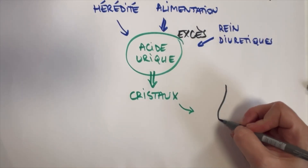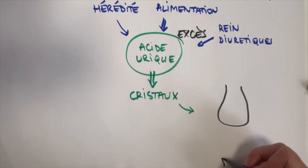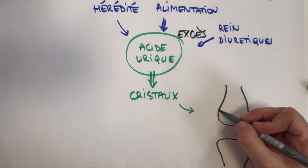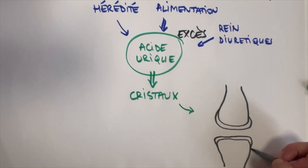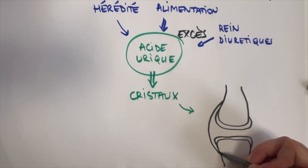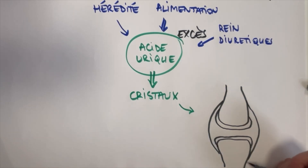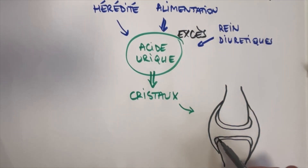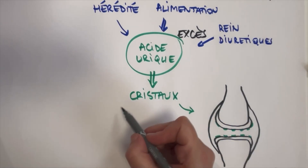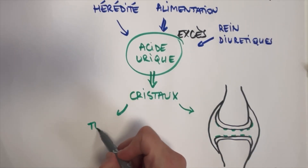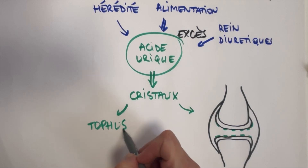Si on schématise ainsi une articulation, elle est formée de deux os recouverts à leur surface d'un cartilage qui permet l'articulation des deux os l'un face à l'autre, et entourés d'une membrane synoviale et d'une capsule. Lorsque les cristaux de goutte se forment, ils vont venir se déposer à la surface du cartilage. Parfois, les cristaux peuvent aussi se déposer dans la peau : c'est ce qu'on appelle les tophus.